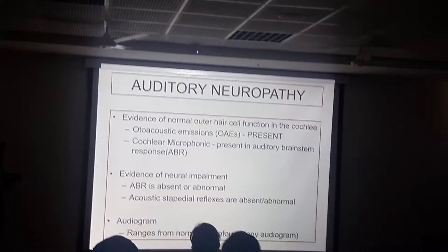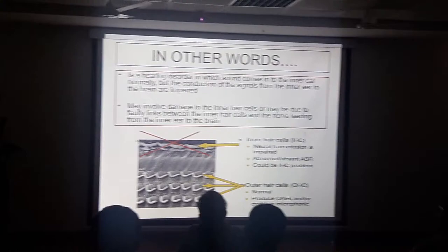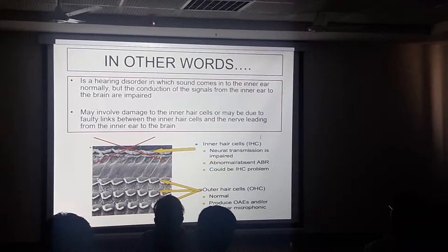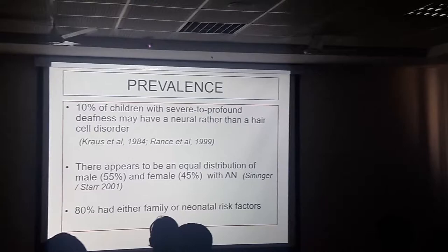Auditory neuropathy can range from a normal to a profound hearing loss. Putting it simply, it is a hearing disorder where sounds come into the ear normally, but the connection signals from the inner ear to the brain are disrupted. This may be due to damage to the inner hair cells, or it may be due to a faulty connection from the inner hair cells onwards. So you can have normal outer hair cells but have a problem from the inner hair cells onward.